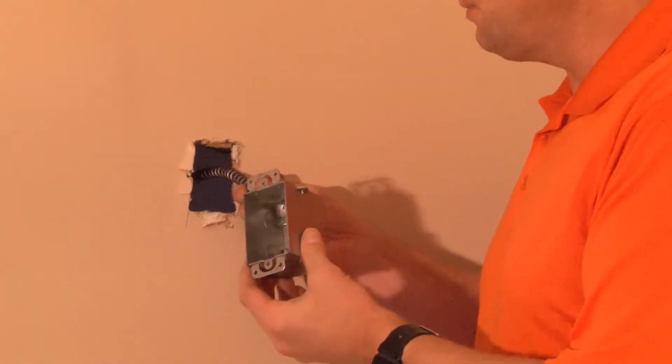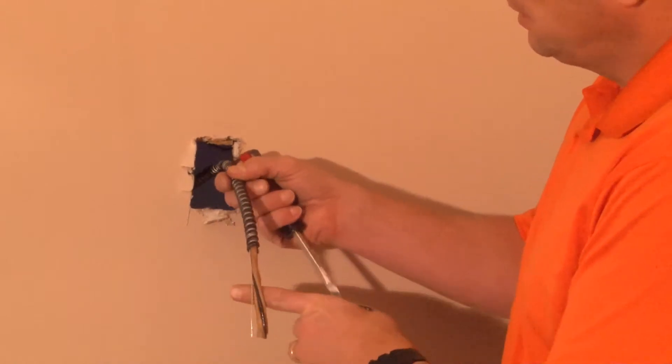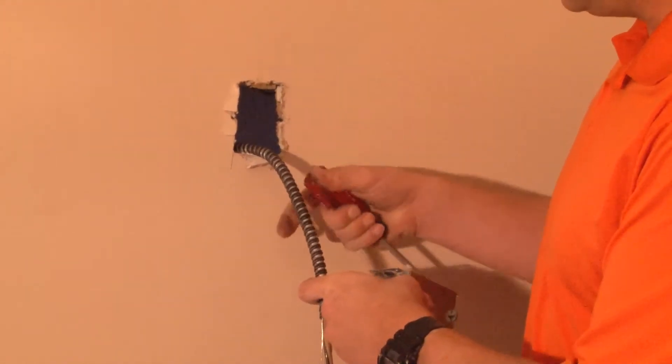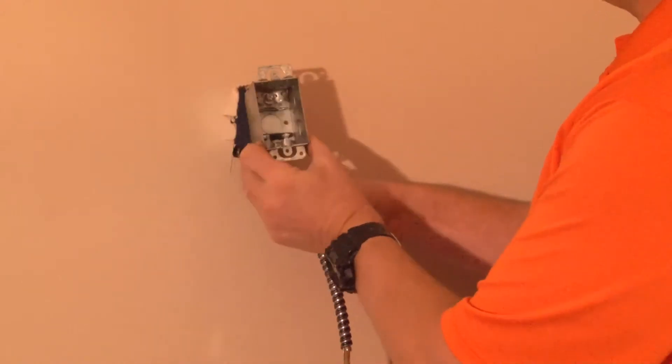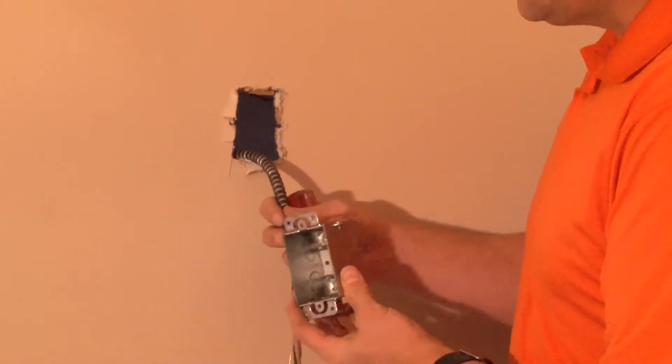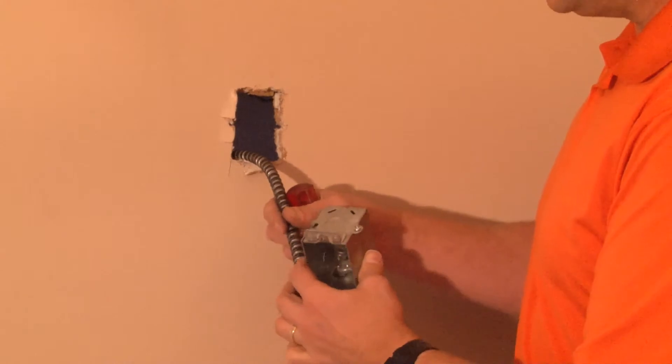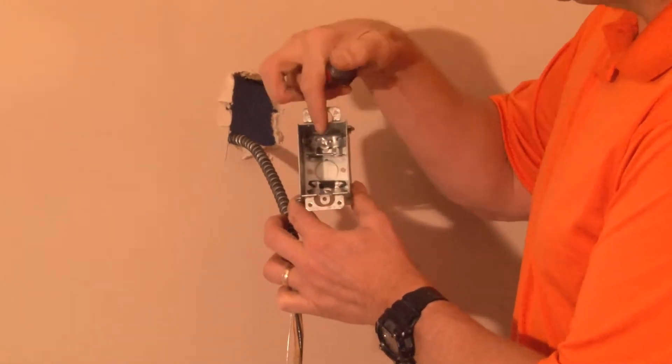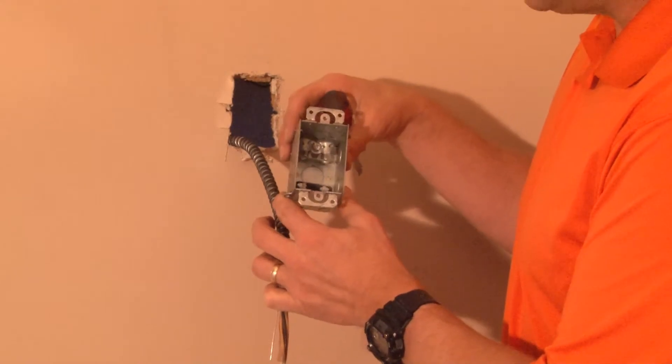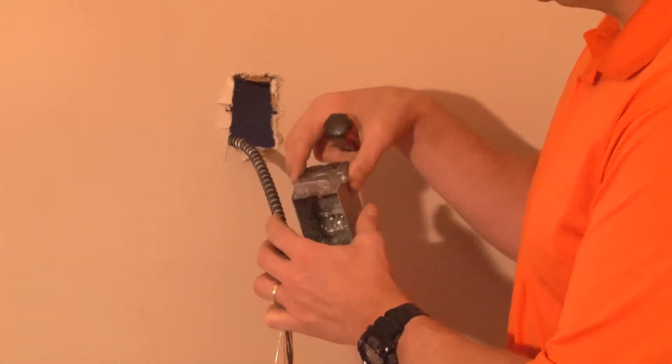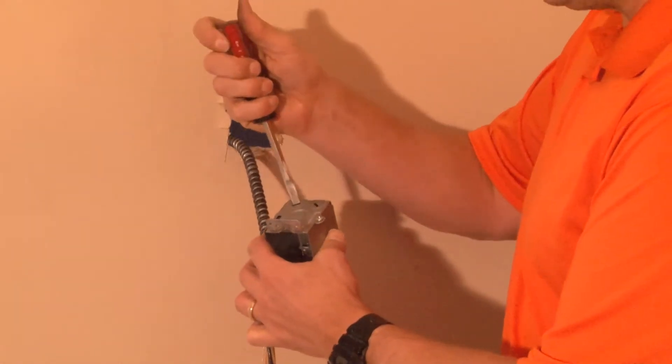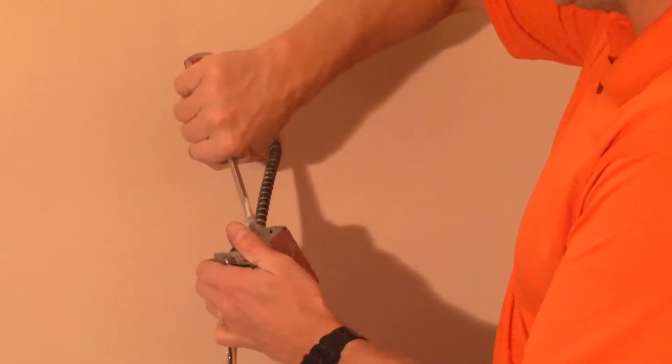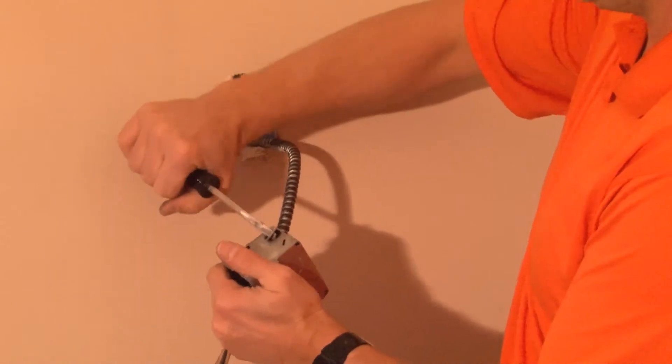The flexible metallic conduit is pulled through an opening that is cut by the installer to match the backside of the switch box. In order to install the flexible metallic conduit in the pre-assembled and pre-installed clamps that are designed for flexible metal conduit, you simply take a flathead screwdriver and pry away the slug that protects the opening.